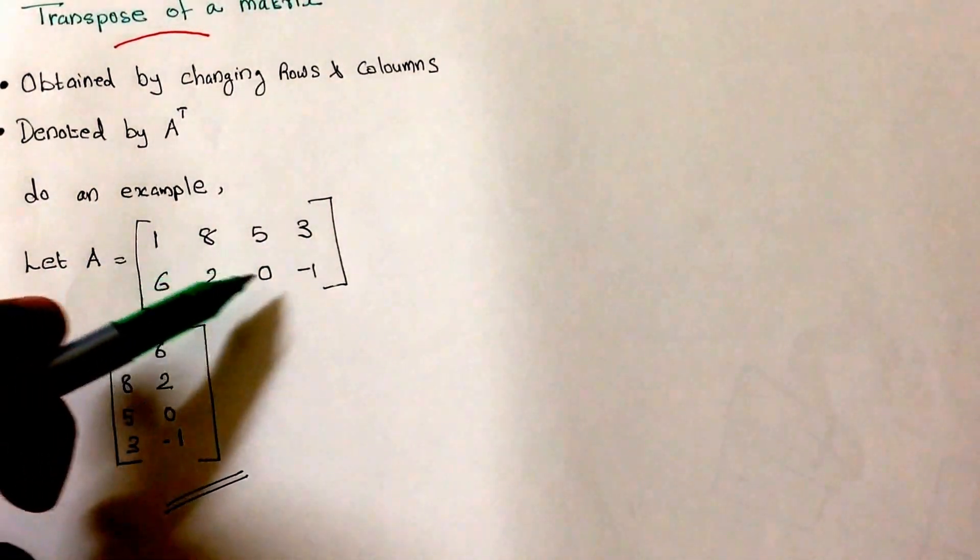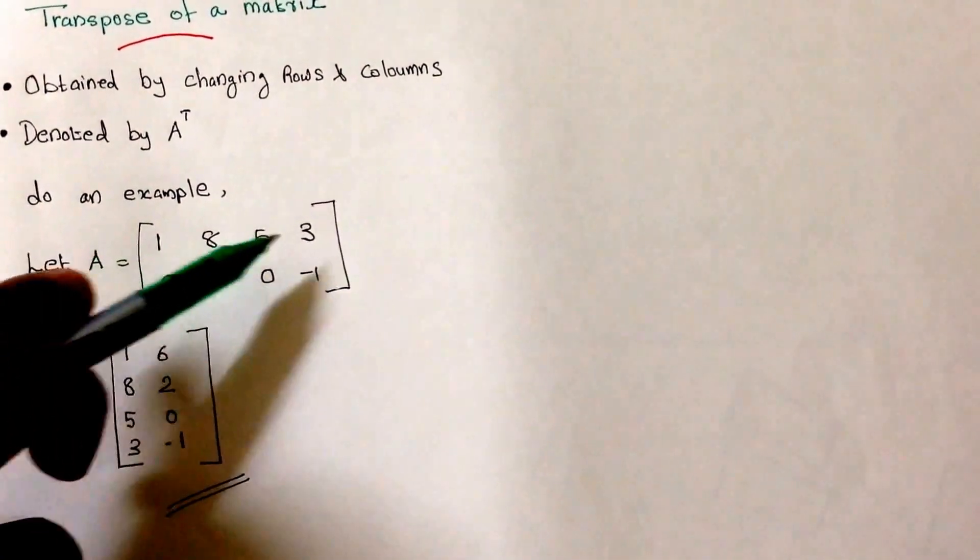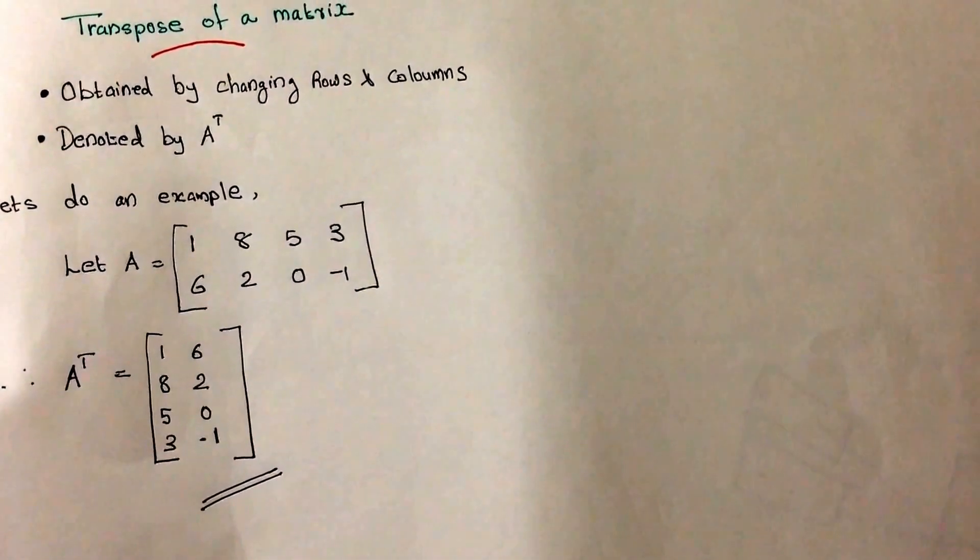And this row 6, 2, 0, -1 will become the other column. This means we converted the rows into columns - both rows - that is called the transpose of a matrix.